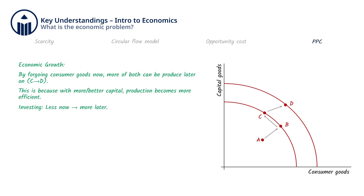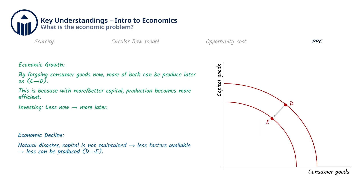Outward shifts of the PPC depict economic growth, and inward shifts depict economic decline. If a natural disaster took place, which would destroy land and capital stock, that means less of both kinds of goods could be produced than before the disaster. This kind of decline could also happen if capital weren't maintained and allowed to deteriorate. Increases and decreases in the quality and quantity of any of the factors of production expand and contract the PPC, which represents the total productive capacity of the economy.